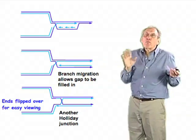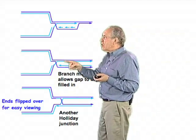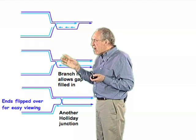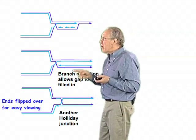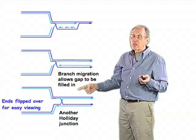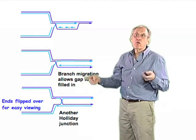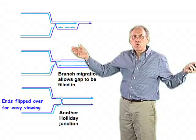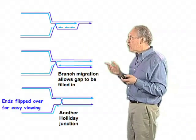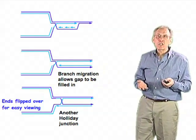There's still one problem left in this process: there's still a crossover here, which, after a little bit of branch migration and ligation, turns out to again be a Holliday junction. That Holliday junction has to be resolved, or there isn't going to be the ability for these two replicating molecules to come apart. So we need to look at the consequences of Holliday junction resolution.